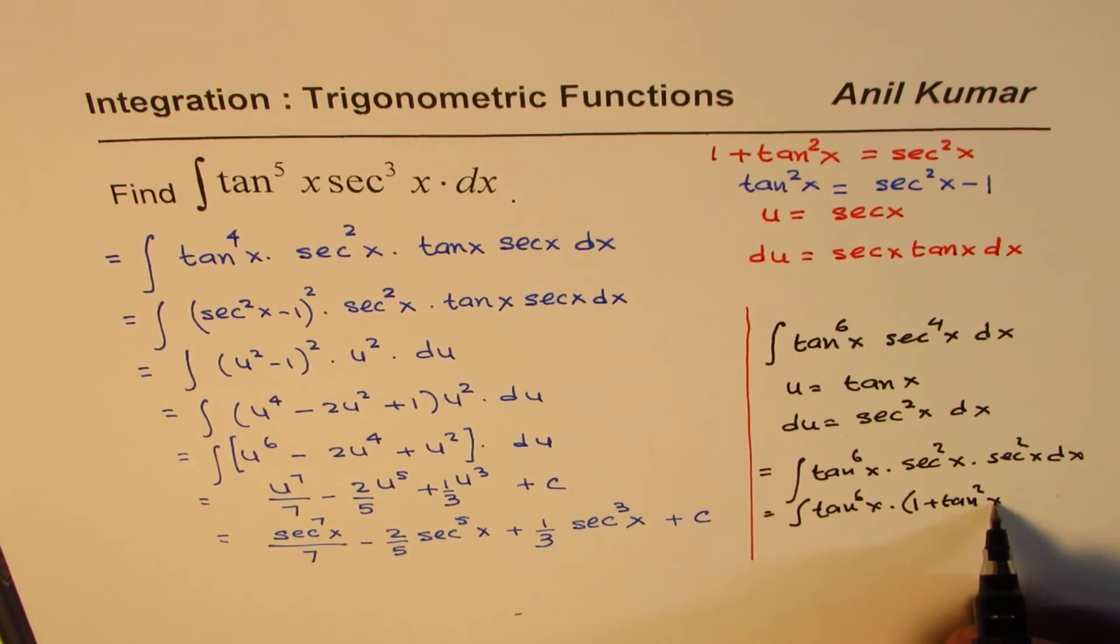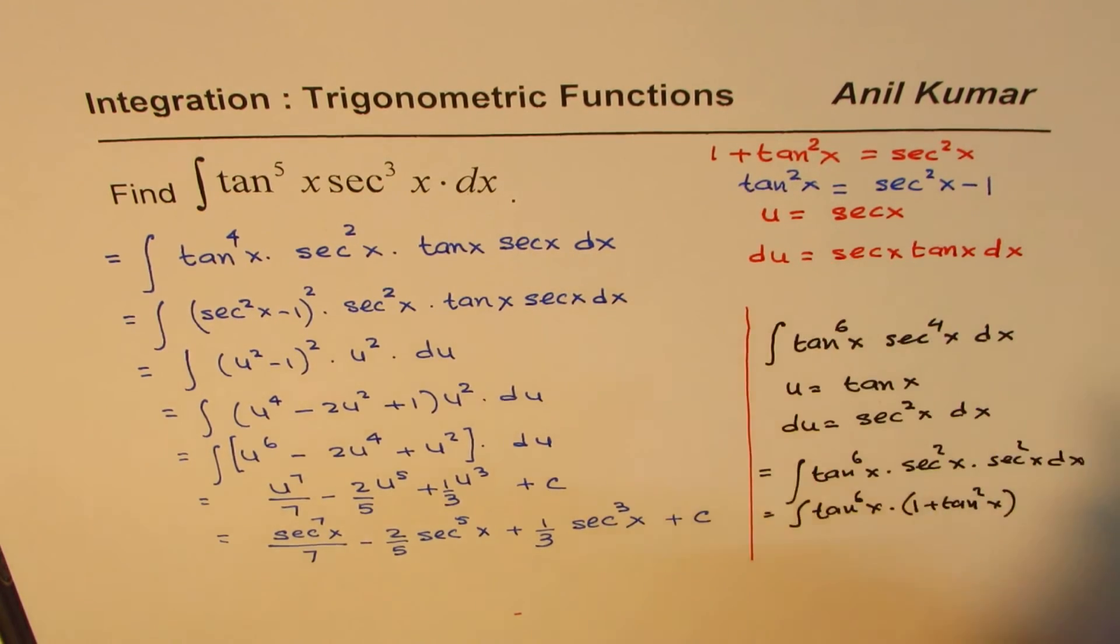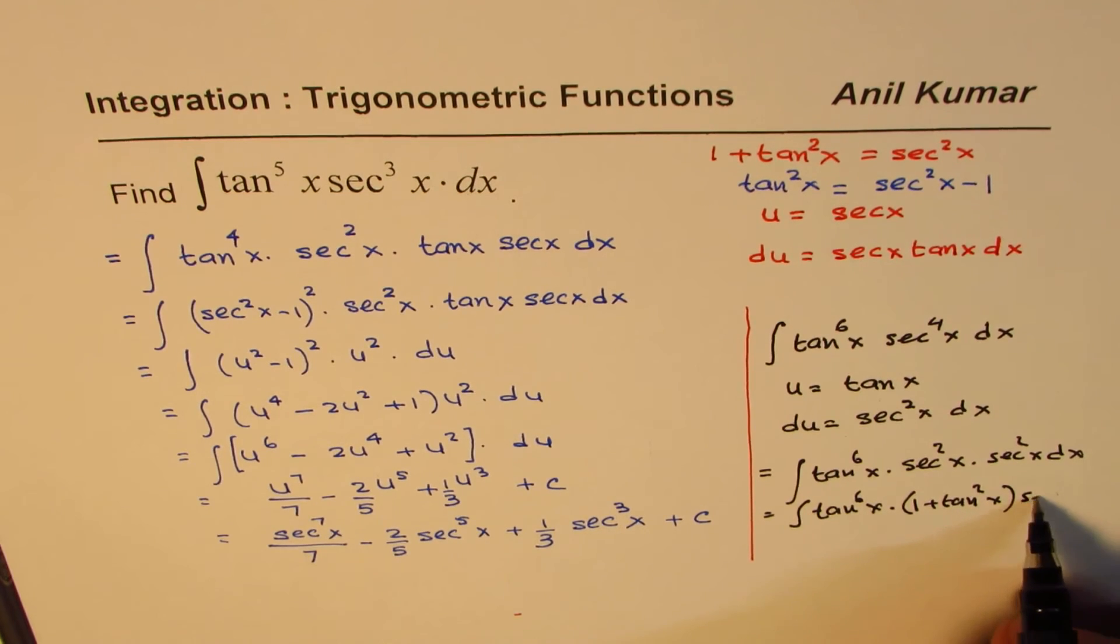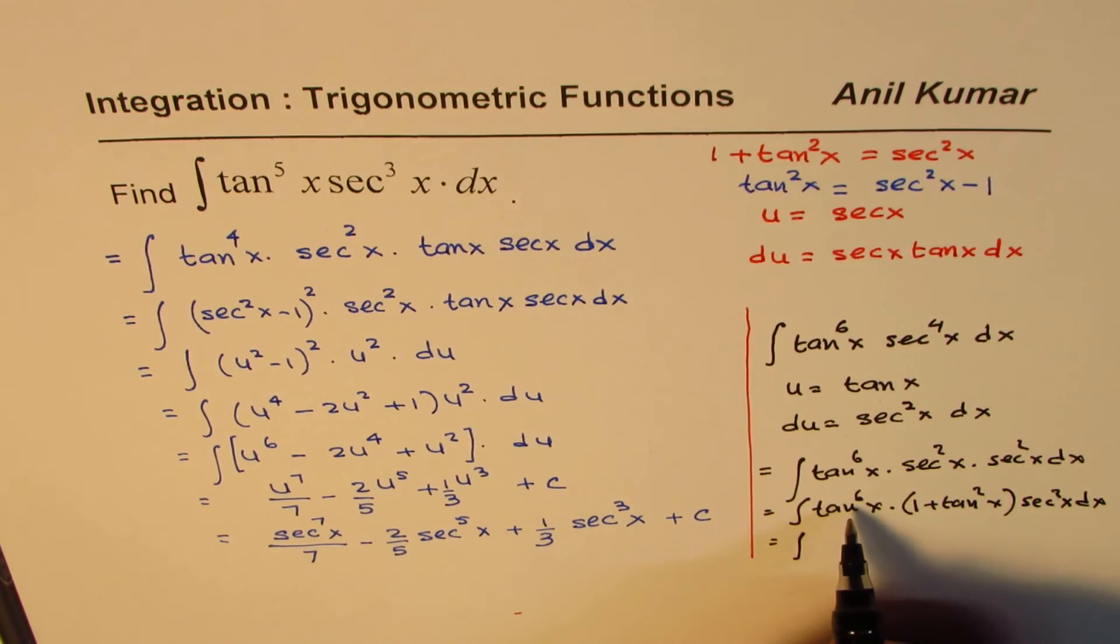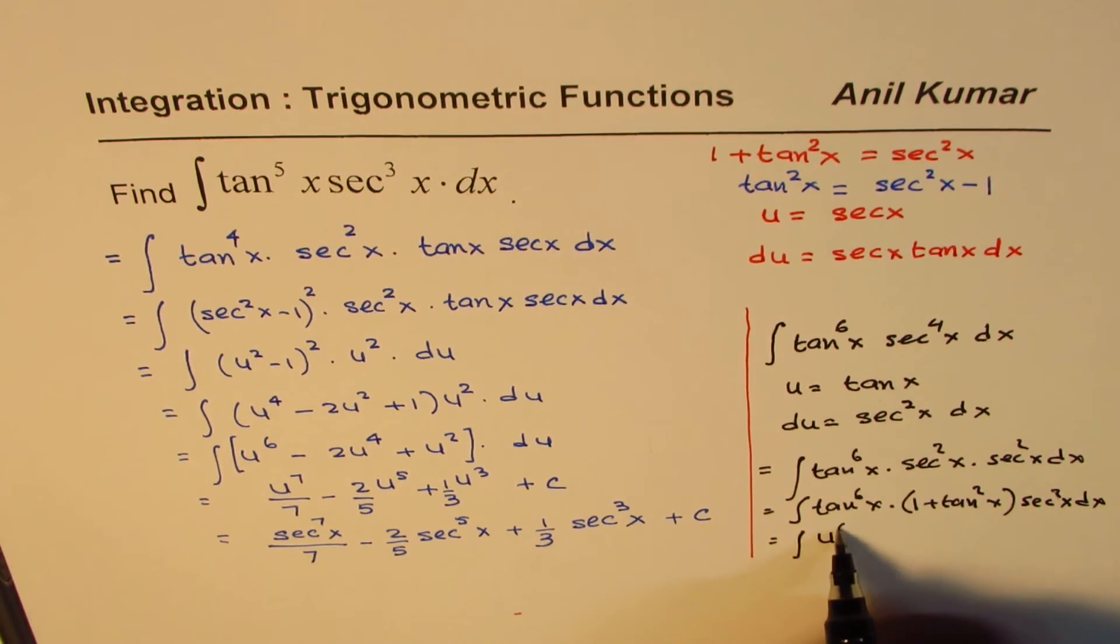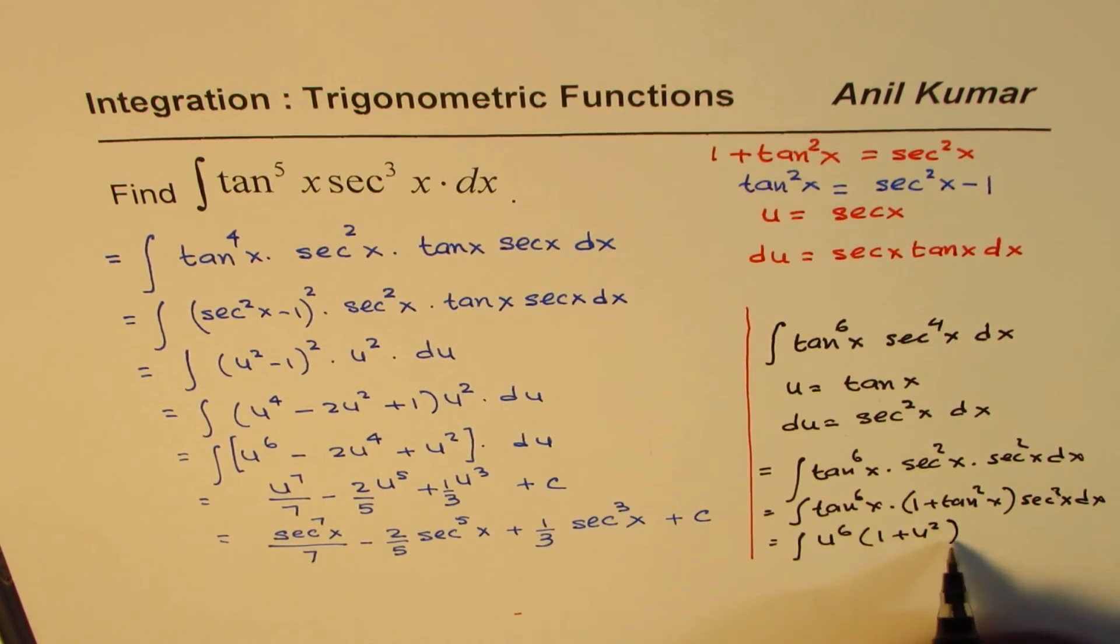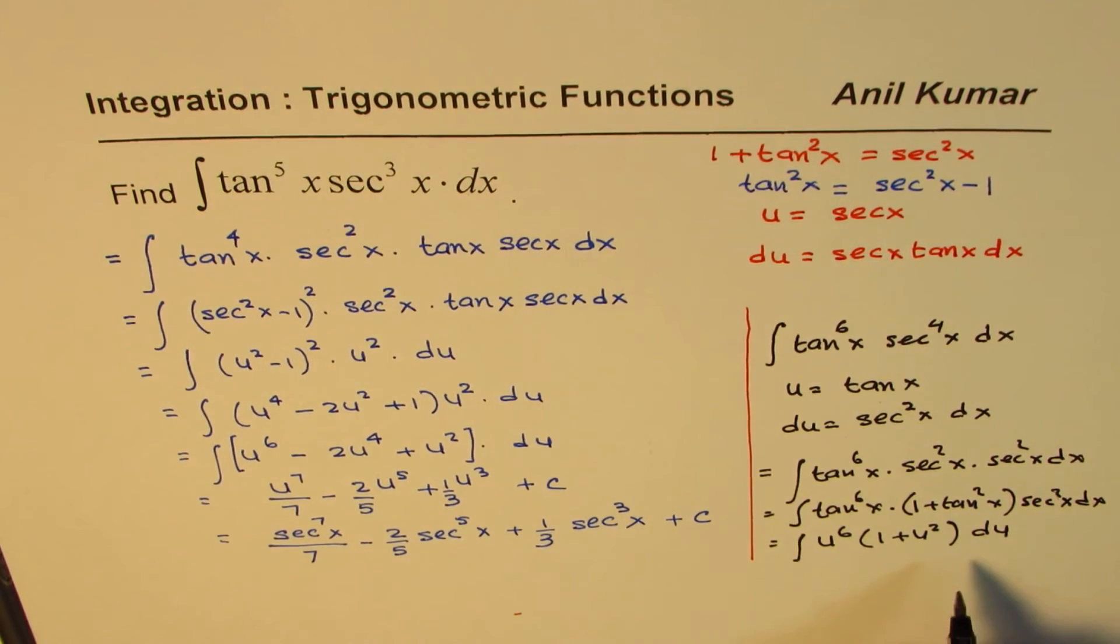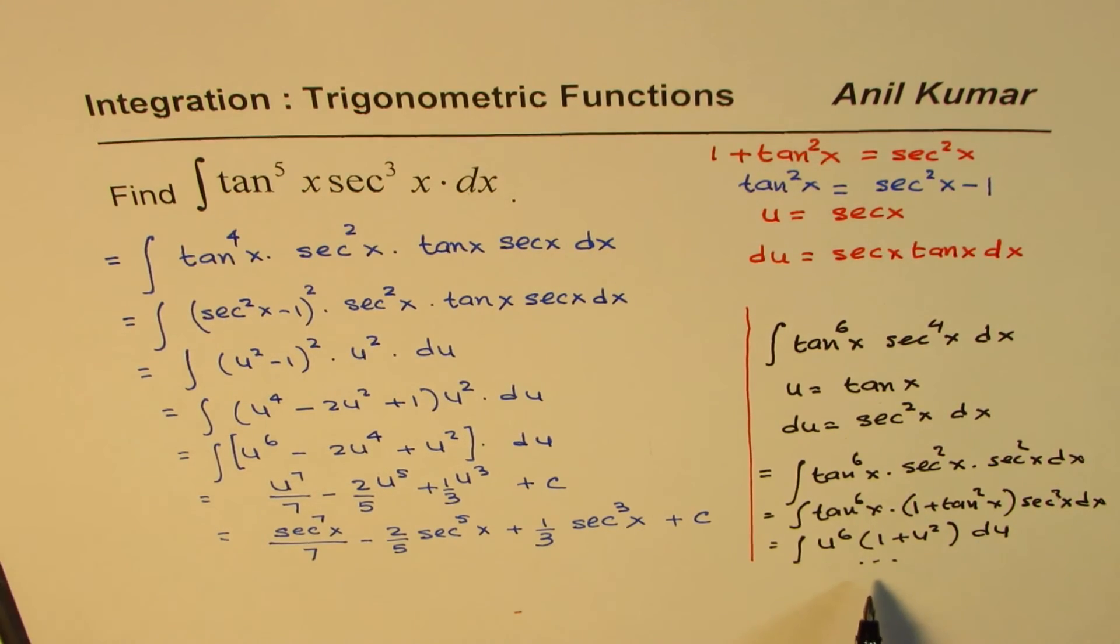And this secant square x will be replaced by du. So at present I am writing like this only. Now at this stage we could write this as, we are substituting u for tan x. So it becomes u to the power of 6, 1 plus u square, and that becomes du. And now you can easily integrate. So you can now continue and integrate this one. I hope with this you understand.